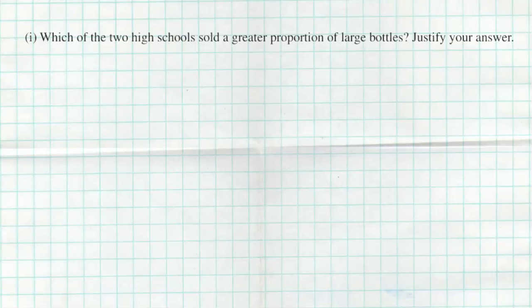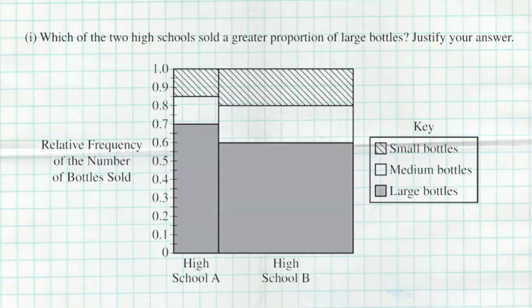So the first question was actually really really easy: which of the two high schools sold a greater proportion of large bottles? Justify your answer. Well, here all we got to do is look. Large bottles at high school A was about 70%, and large bottles at high school B look to be right around 60%. If you get a magnifying glass you might even say it's a smidgen lower, but clearly, you know, if I said which of the two high schools sold a greater proportion, well high school A sold a greater proportion. They sold 70% versus high school B sold 60%.